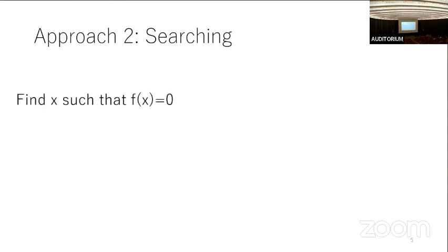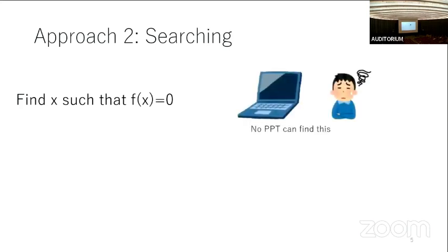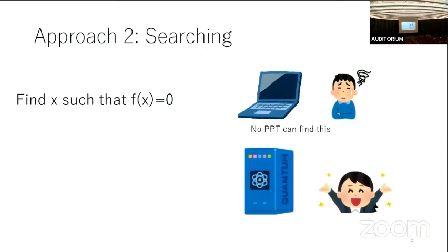The second approach is search-type advantage. The goal of a search problem is to find some answer that satisfies some relation. Again, classically no PPT algorithm can find the answer, but there exists a quantum algorithm that can find it. In this case we say a search advantage exists.